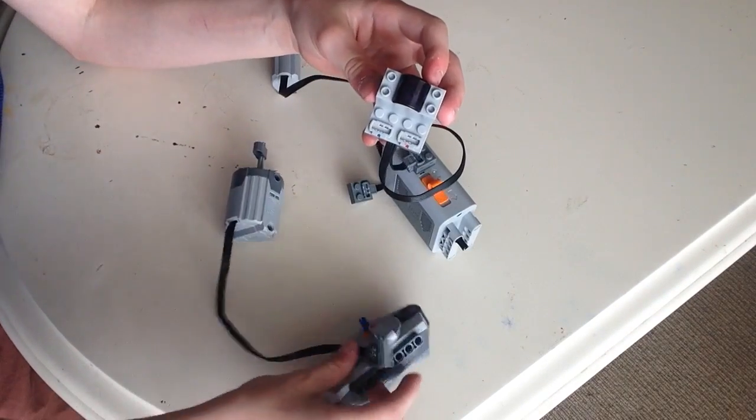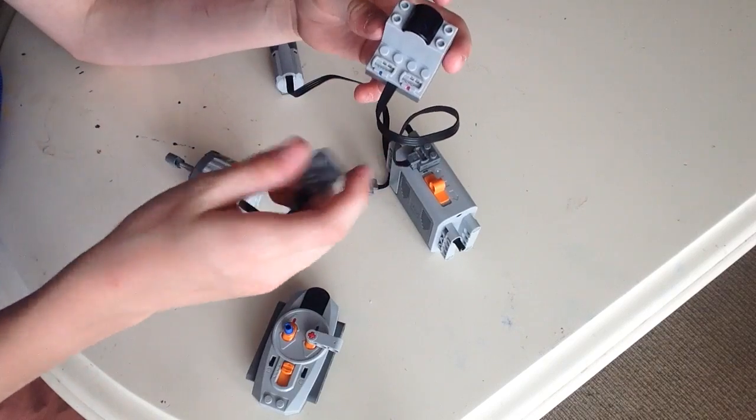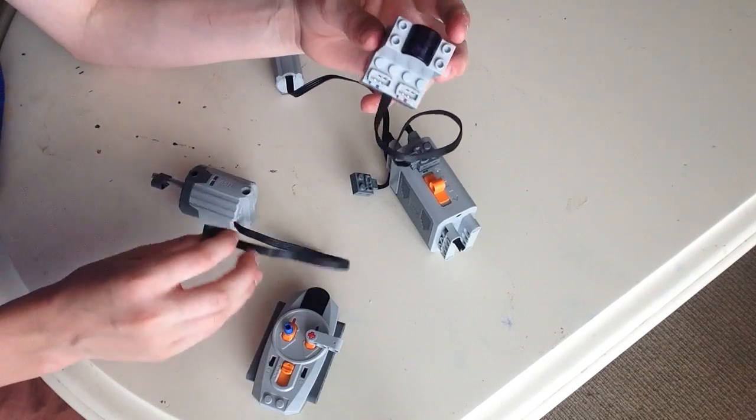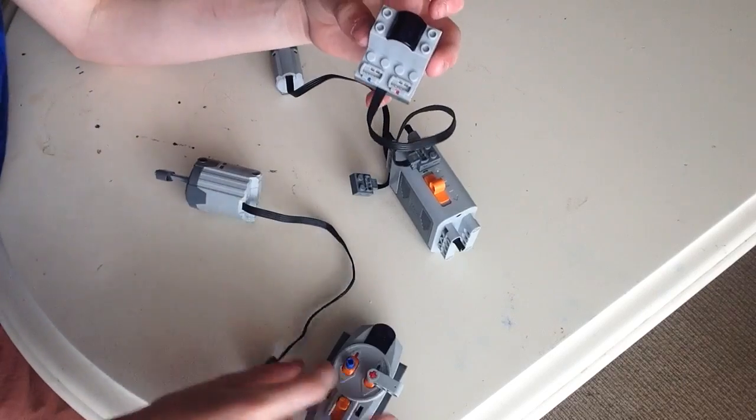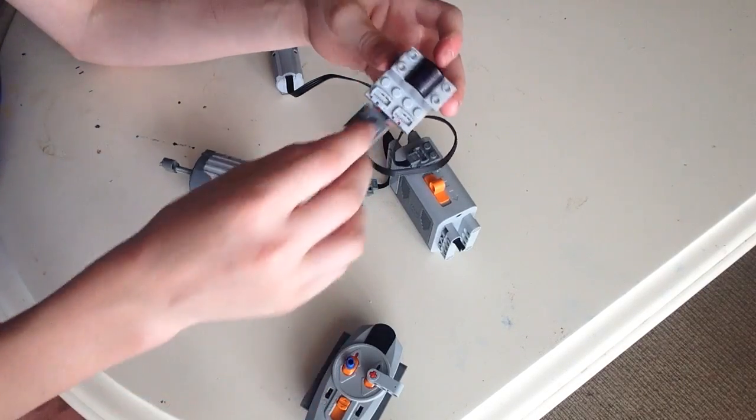And red switch and blue switch on the controller. Well, you just connect the motor you want to use for which switch you want to use. So I want to use the XL motor for the red switch, so I just connected it up to the red one like that.